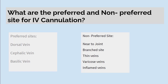What are the preferred and non-preferred sites for IV cannulation? The preferred sites are the dorsal vein, cephalic vein, and basilic vein. The non-preferred sites are near a joint, branched site, thin veins, varicose veins, and inflamed veins.